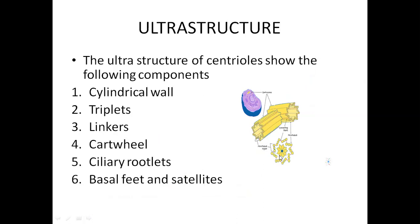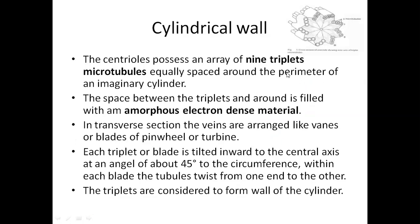A centriole is made up of mainly nine triplets of microtubules — you can see in this picture one, two, three, four, five, six, seven, eight, nine. Nine triplets of microtubules are arranged as if around an imaginary cylinder, distributed around the circumference. In between these triplets there is also the presence of an amorphous electron-dense material.